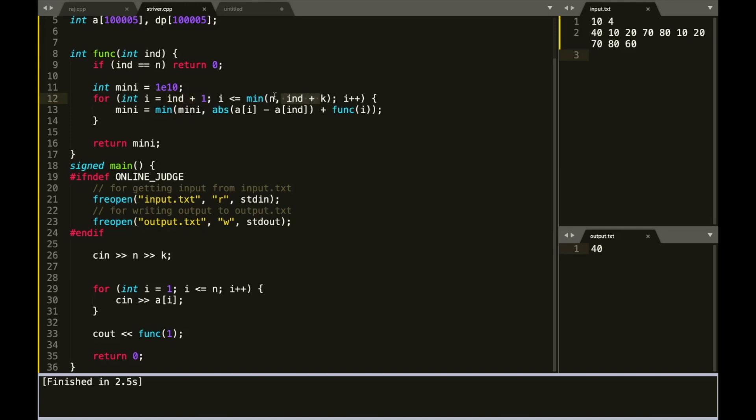That is index plus k or n. Why? Because it might happen index plus k exceeds n. We cannot go to that index because we know at max we can go up till index n. So we will move up till the minimum of n or index plus k.